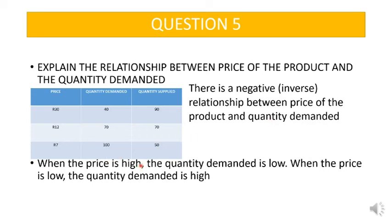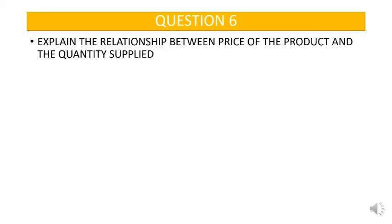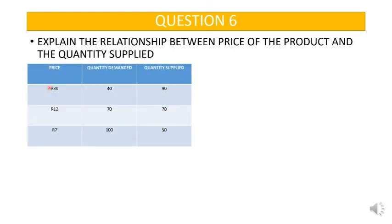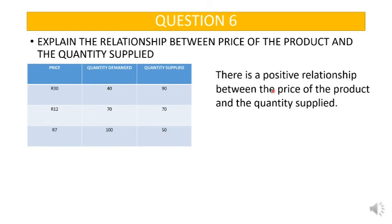Question 6: explain the relationship between the price of the product and the quantity supplied. Using the table, when the price is high, the quantity supplied is high. When the price of the product is low, the quantity supplied is also low. So there is a positive relationship between the price of the product and the quantity supplied.